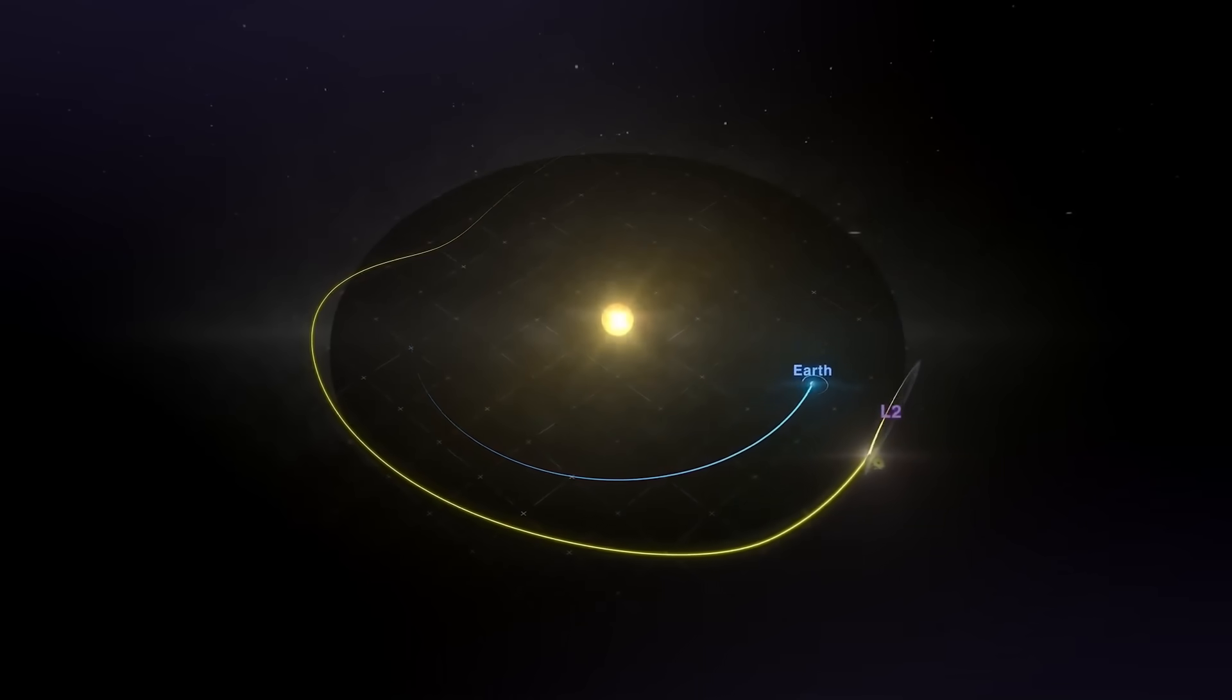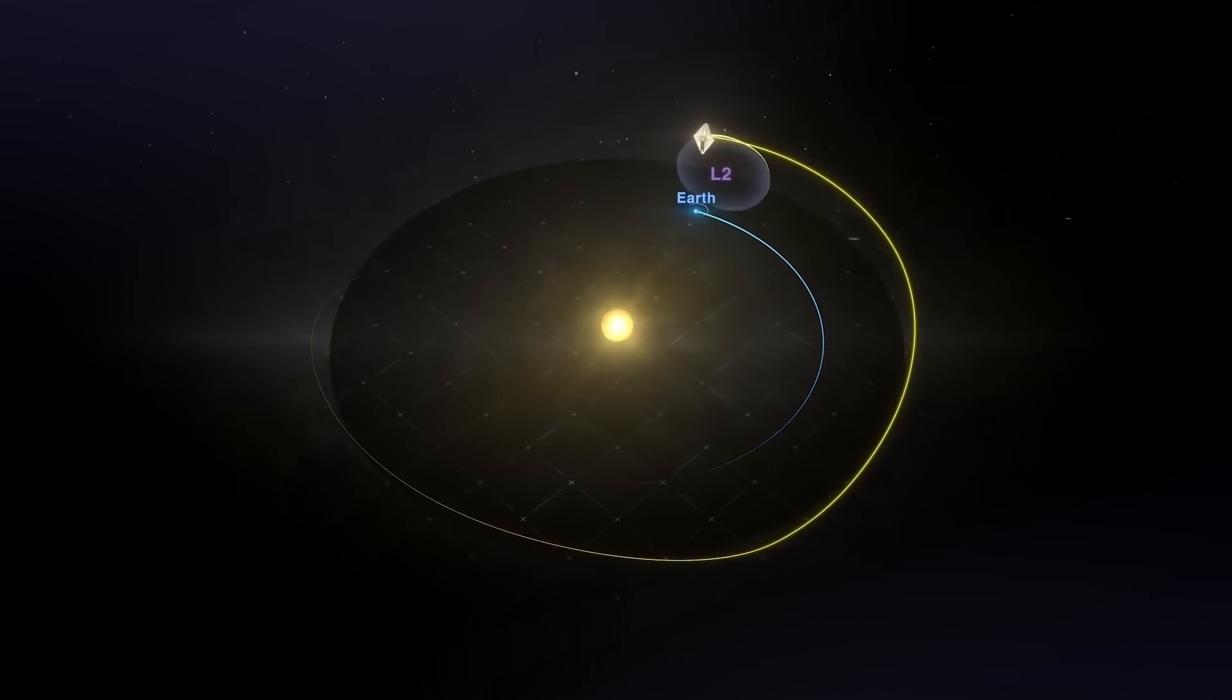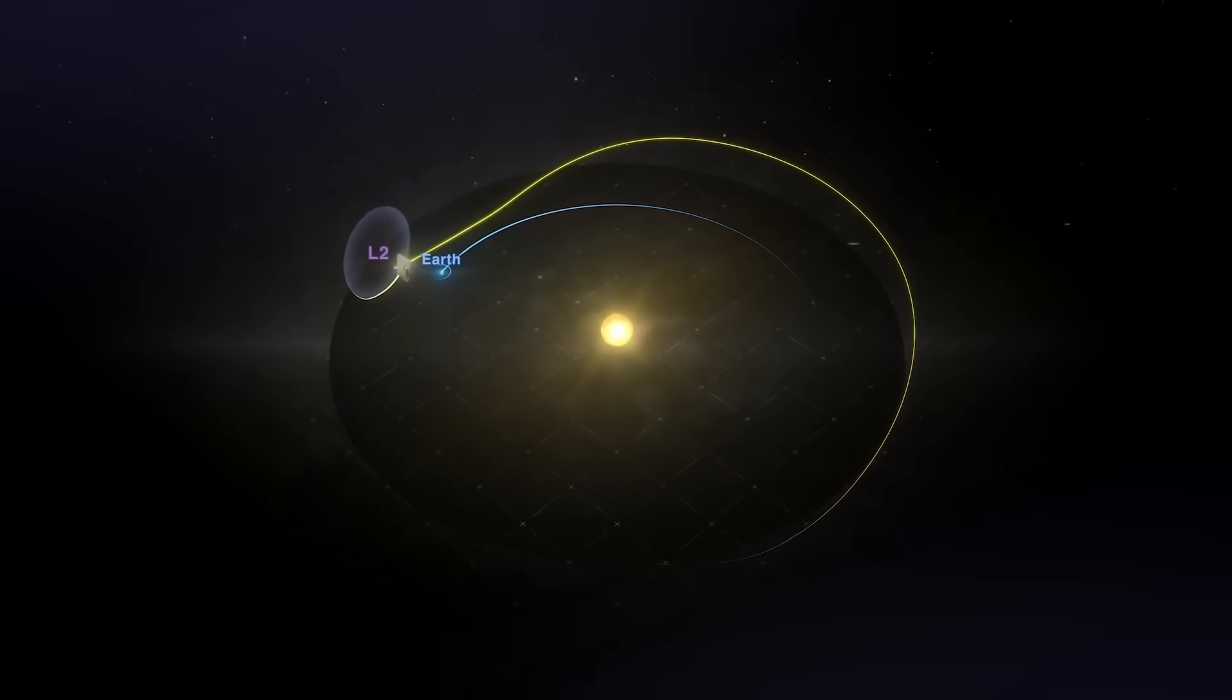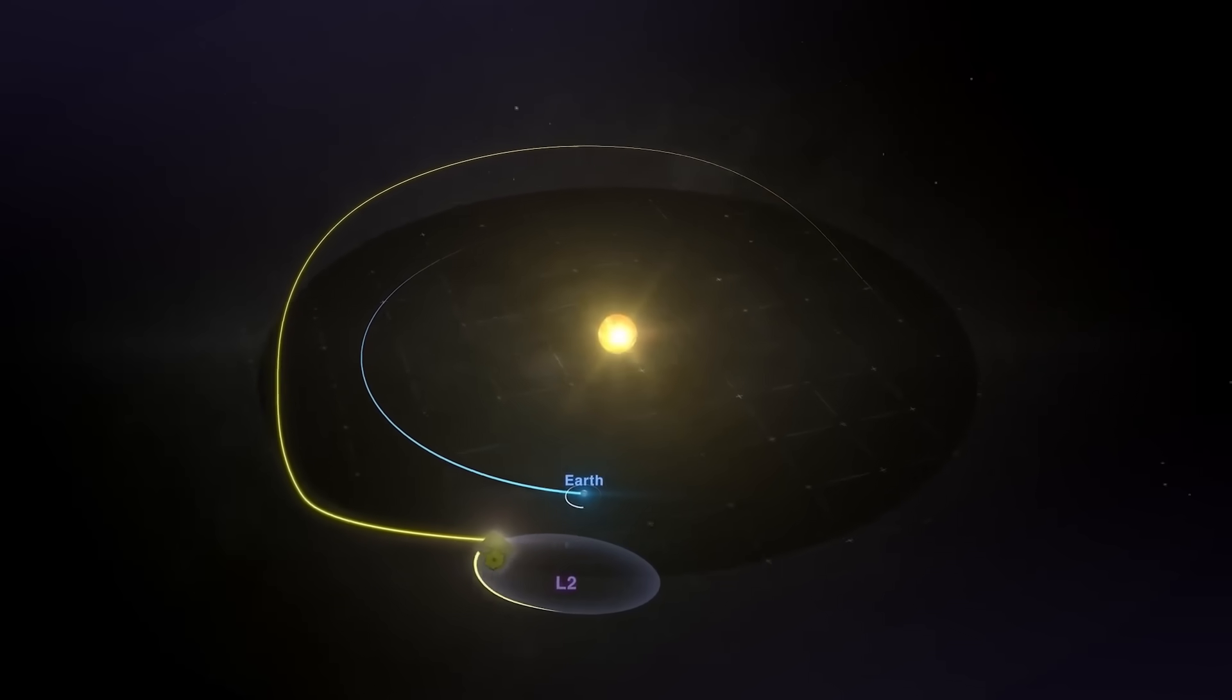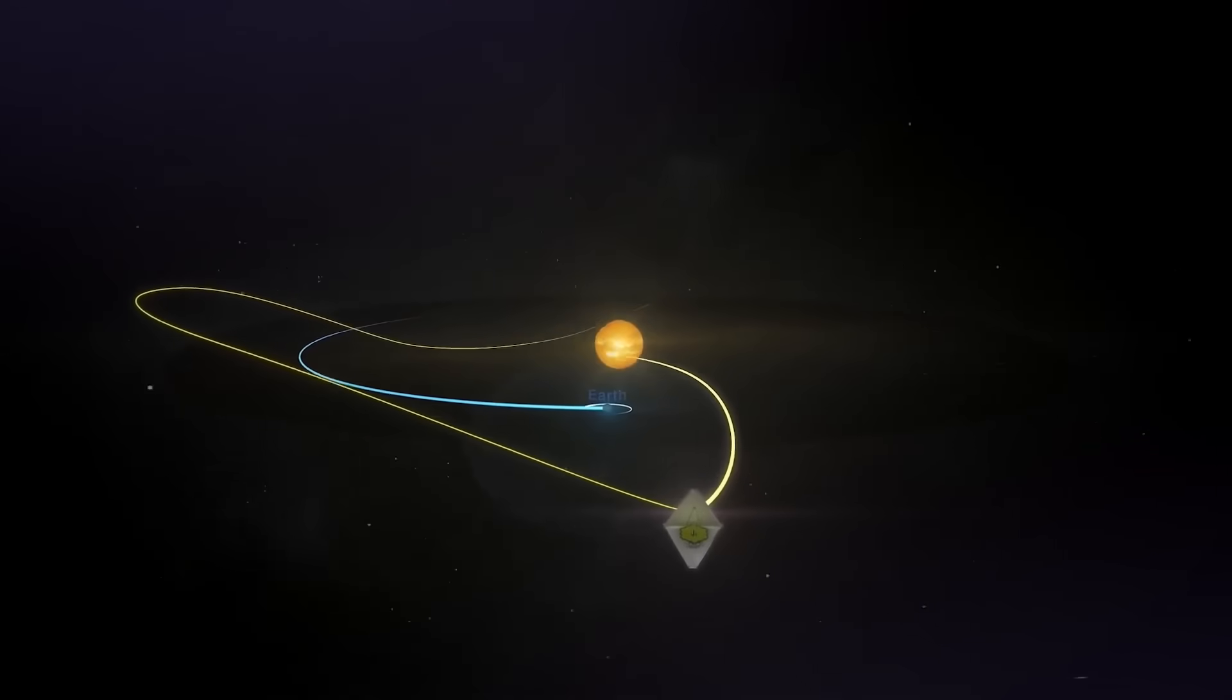In addition to Webb's extreme stability, its orbital location around Lagrange 2 and its distance of about a million miles from the Earth's atmosphere allow for an uninterrupted view and quick data analysis.